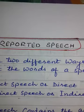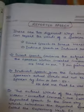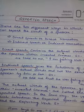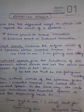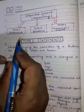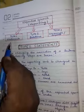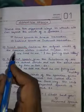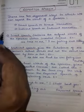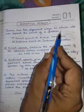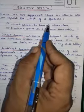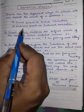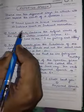Today I am going to teach you Reported Speech. In your syllabus, Reported Speech covers Statements, Questions, and Commands and Requests. Before going to those topics, we must know that there are two different ways in which we can report the words of a speaker — directly and indirectly. These are called Direct Speech and Direct Narration, and Indirect Speech and Indirect Narration.